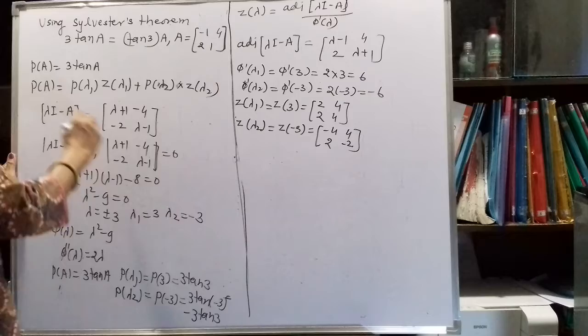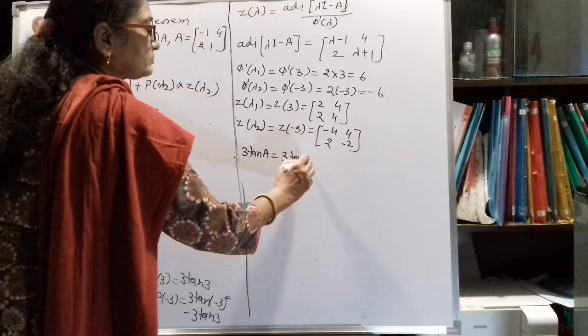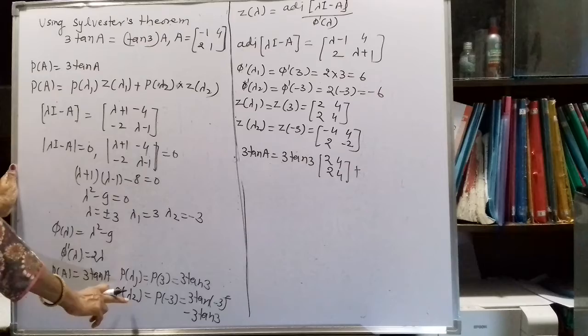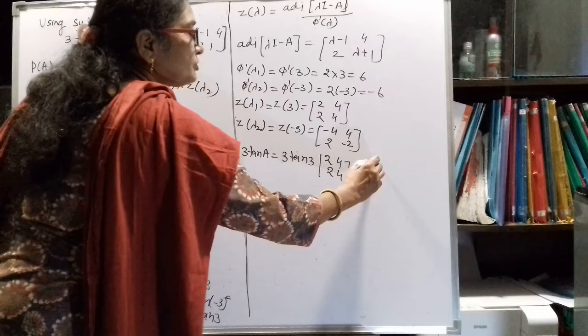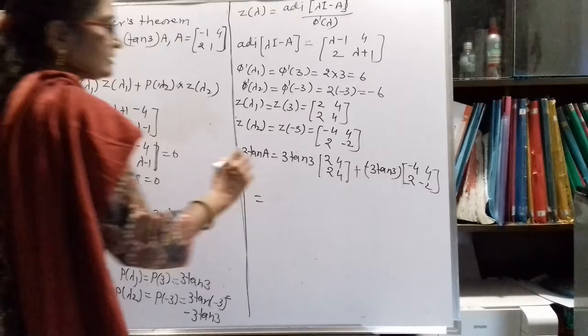Now assembling by Sylvester's theorem: 3·tan(A) = P(λ₁)·Z(λ₁) + P(λ₂)·Z(λ₂). Substituting: P(λ₁) = 3·tan(3) times the matrix [2, 4; 2, 4] over 6, plus P(λ₂) = −3·tan(3) times the matrix [−4, 4; 2, −2] over −6.